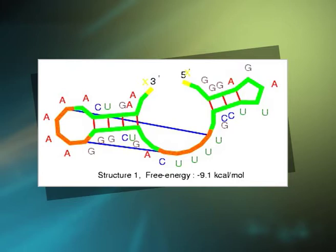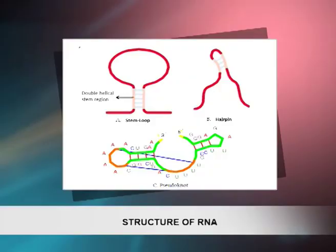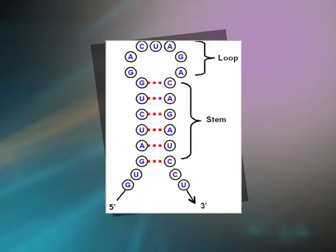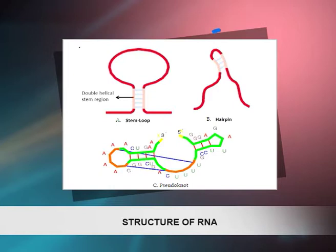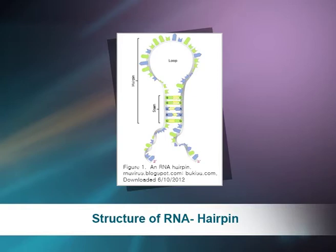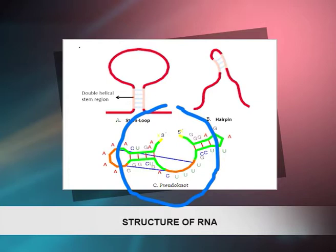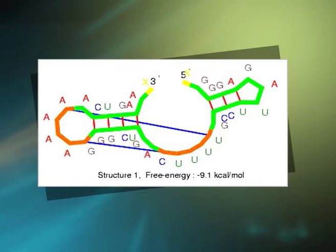tRNA and rRNA molecules also have well-defined three-dimensional structures. Secondary and three-dimensional structures have also been recognized in mRNA, particularly near the ends of molecules. A stem loop is a lollipop-shaped structure formed when a single-stranded nucleic acid molecule loops back on itself to form a complementary double helix with a stem topped by a loop. Hairpins are a common type of secondary structure in RNA molecules, looking like a loop or U-shape. A pseudoknot is minimally composed of two helical segments connected by single-stranded regions or loops.